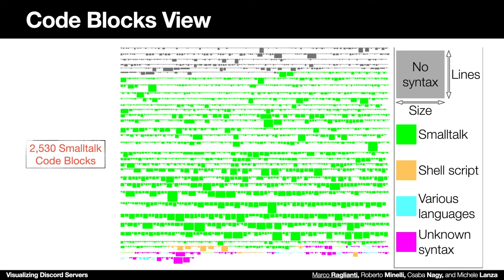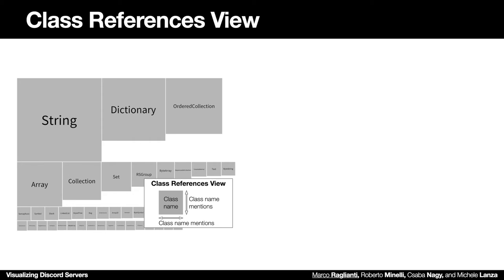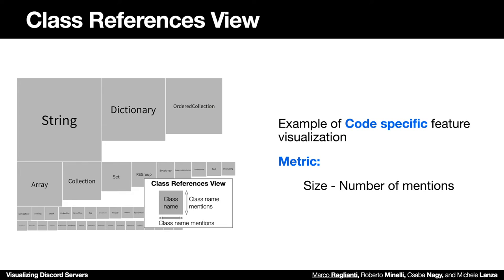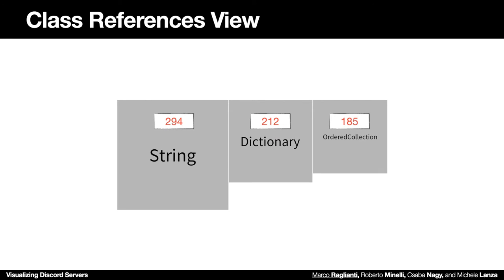By digging deeper in the extracted code blocks, we come to the latest view that we are going to present. The class references view is just an example of a code-specific feature visualization. In this case, we map on the sides of the entity the number of mentions of the class in the Faro collection hierarchy of subclasses. We can see that there are 294 mentions of the String class, 212 mentions of the Dictionary class, and so on.